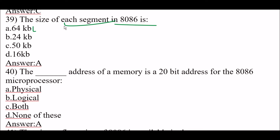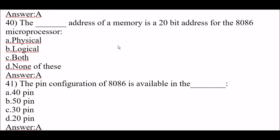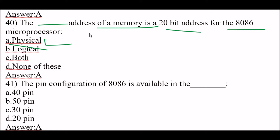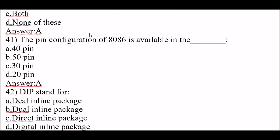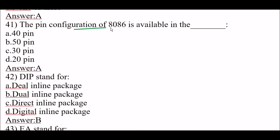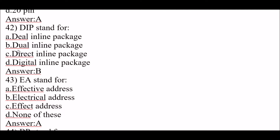Next question: the size of each segment in 8086 is option A, 64 KB. Next question: the physical address of a memory is a 20-bit address for the 8086 microprocessor — option A, physical, is correct. Next question: the pin configuration of 8086 is available in a 40-pin package — option A, 40 pins.